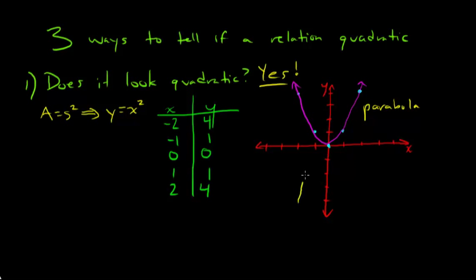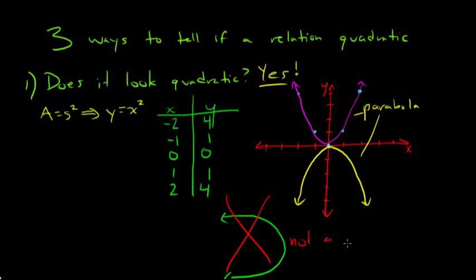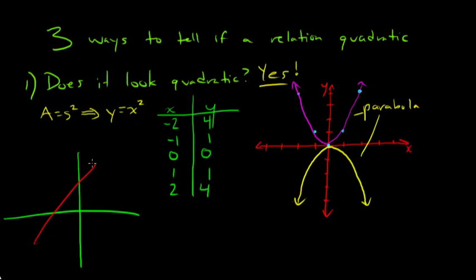Anything that looks like a U, like that, or an upside-down U, like this, that's also a parabola. However, a parabola does not look like this. That is not a parabola. So does it look quadratic? Yes, because that's a quadratic relation. And we can test that for things that aren't quadratic relations. So if I had a graph of something that looked like this, does that look like a parabola? No. So it is not quadratic. So test number one, does it look quadratic? Yes or no? You just have to look at it, and it's pretty quick.